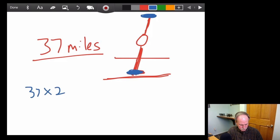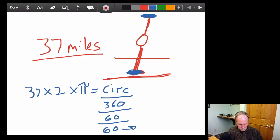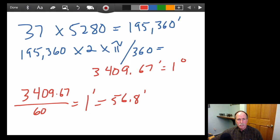So, 37 times 2 times pi equals the circumference. Divide that by 360. Divide it again by 60. And then divide it by 60 to get seconds. And then multiply that by 25. So here's the math. I took 37 miles times 5,280 feet per mile was 195,360 feet. Multiplied that by 2 and by pi and divided it by 360. That comes up to 3409.67 feet is 1 degree. You divide that by 60 to get 1 minute, and that is 56.8 feet.